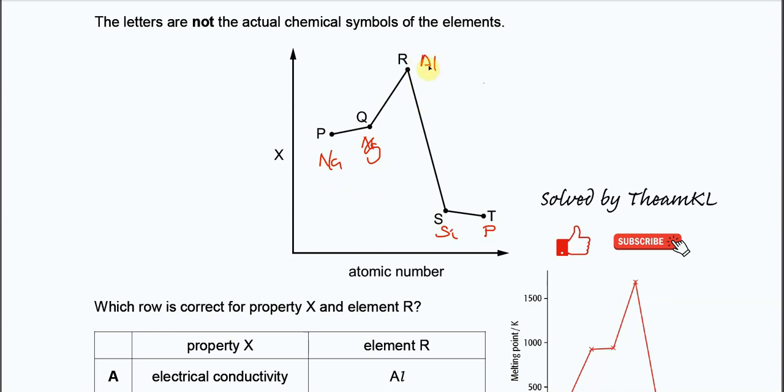Aluminum has more delocalized electrons in the metallic lattice, so it can carry more electrical charge. That's why R is aluminum and X is electrical conductivity.